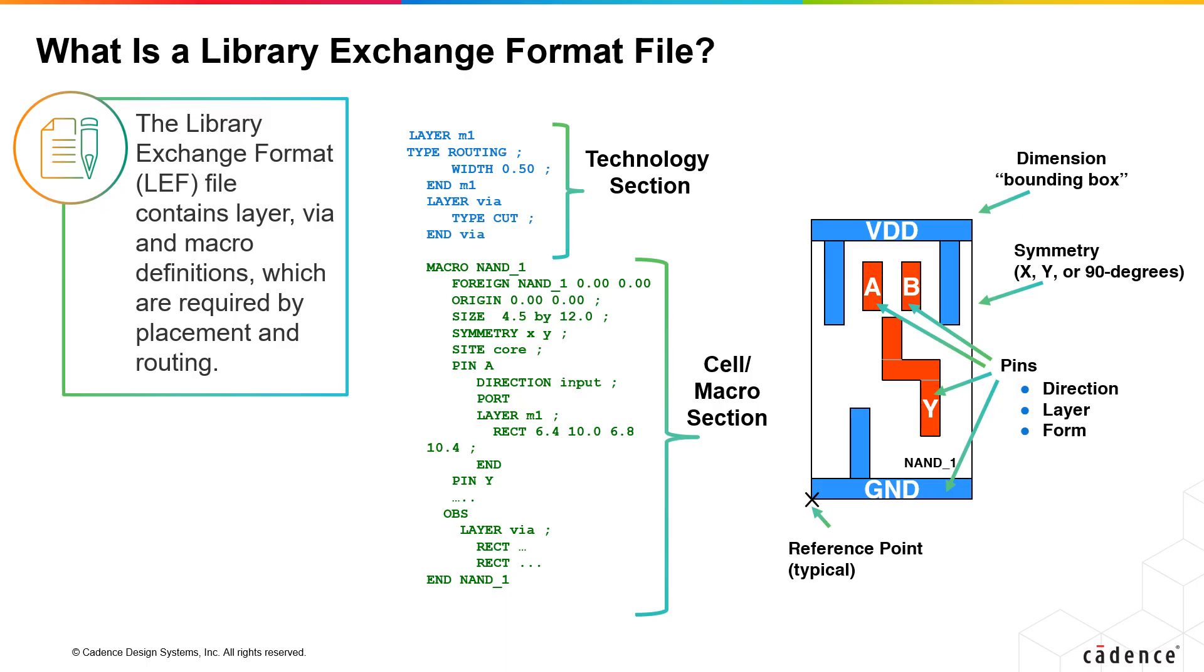The LEF file contains two sections. The tech LEF section contains the information for the routing layers, for example, the width, the minimum width, the layer that the routing is on, and the preferred routing direction. So that's called the tech LEF section.